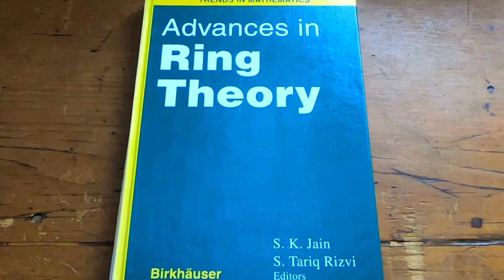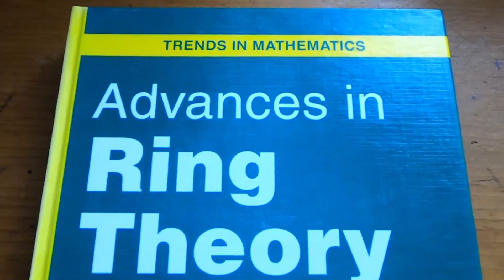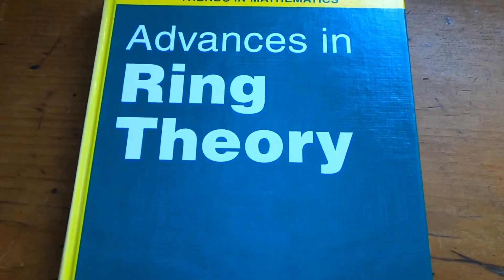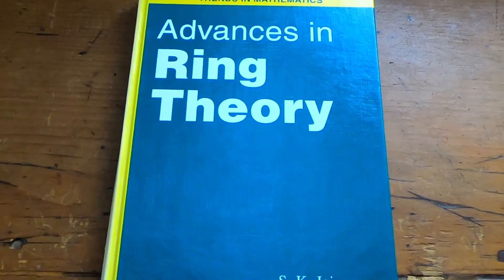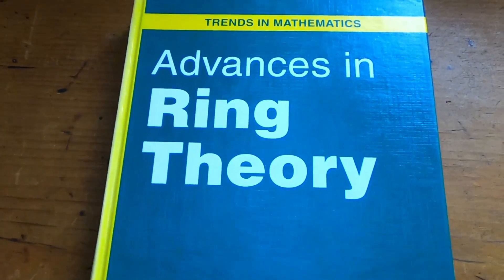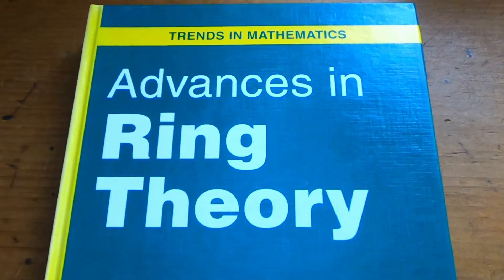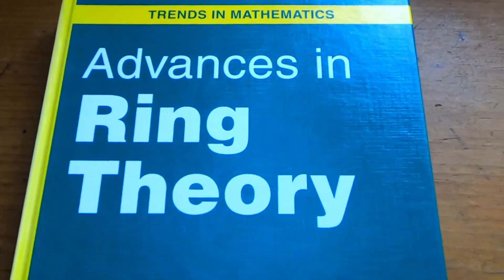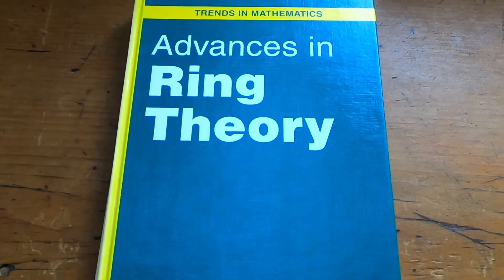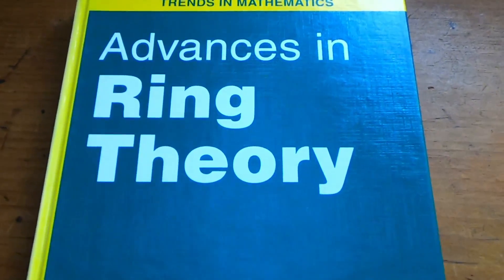This next book is extremely high level — this is as high as you can get. It's Trends in Mathematics: Advances in Ring Theory. This is research-level mathematics in ring theory, a collection of papers presented in May 1996. It is extremely hard to read and not for beginners. But if you're interested in getting a glimpse at what some of the research actually looks like, you can attempt to read it — though you'll have to reference many other books to understand what's going on.